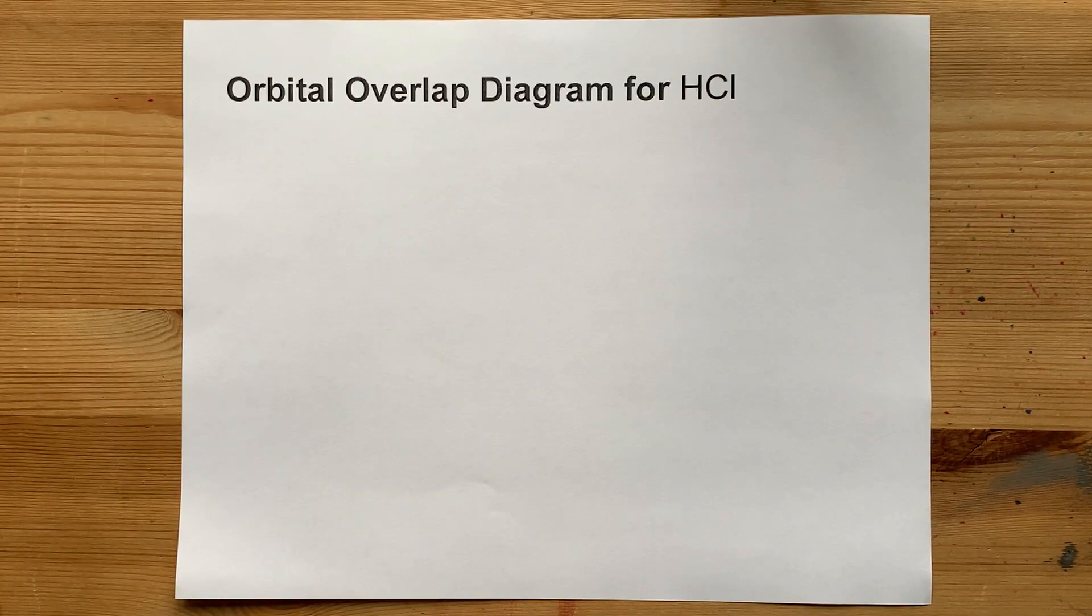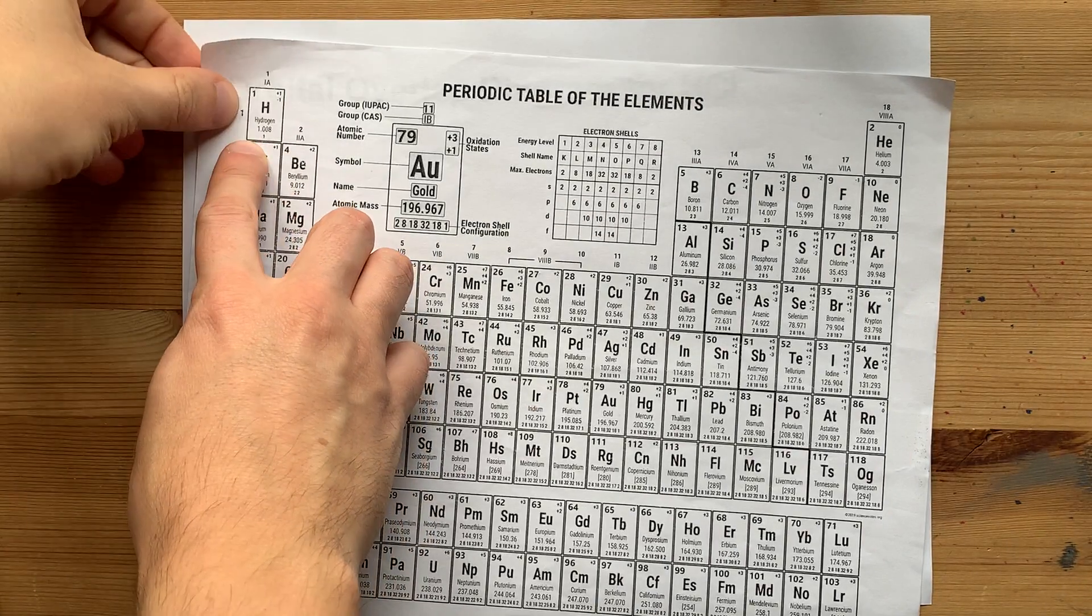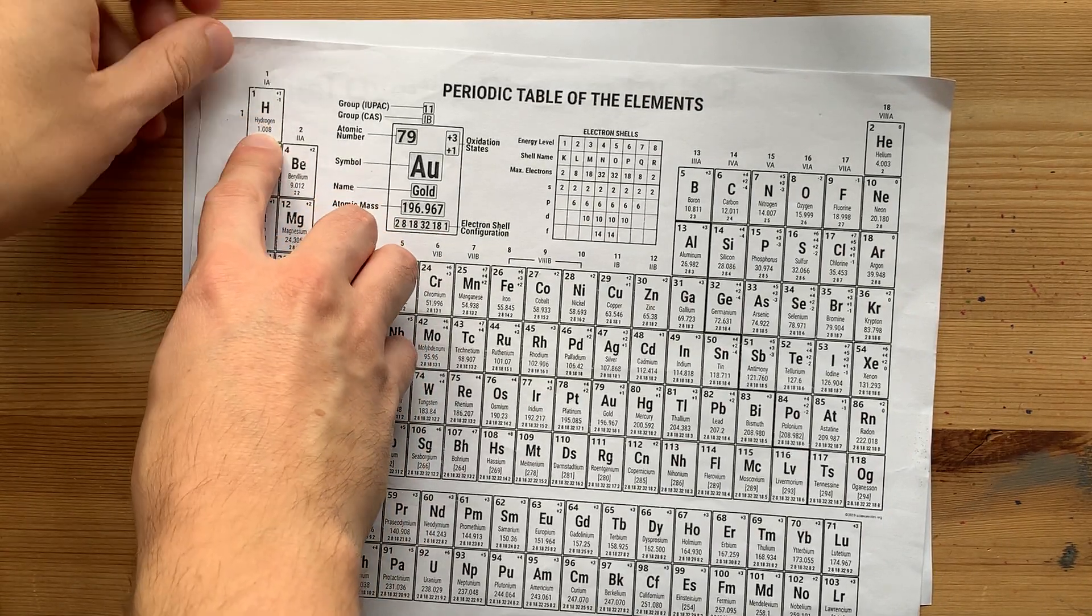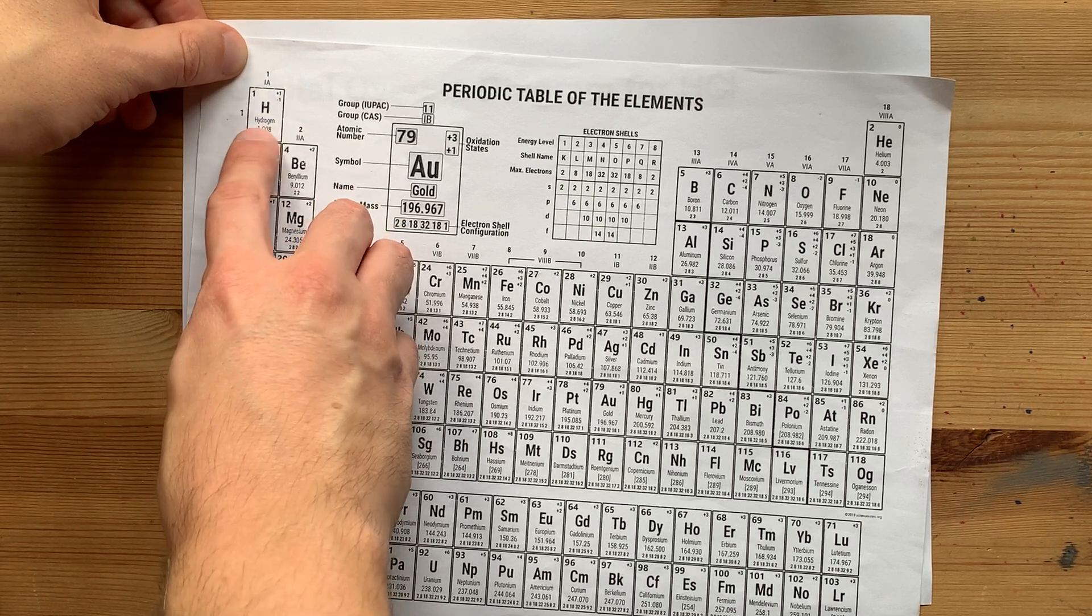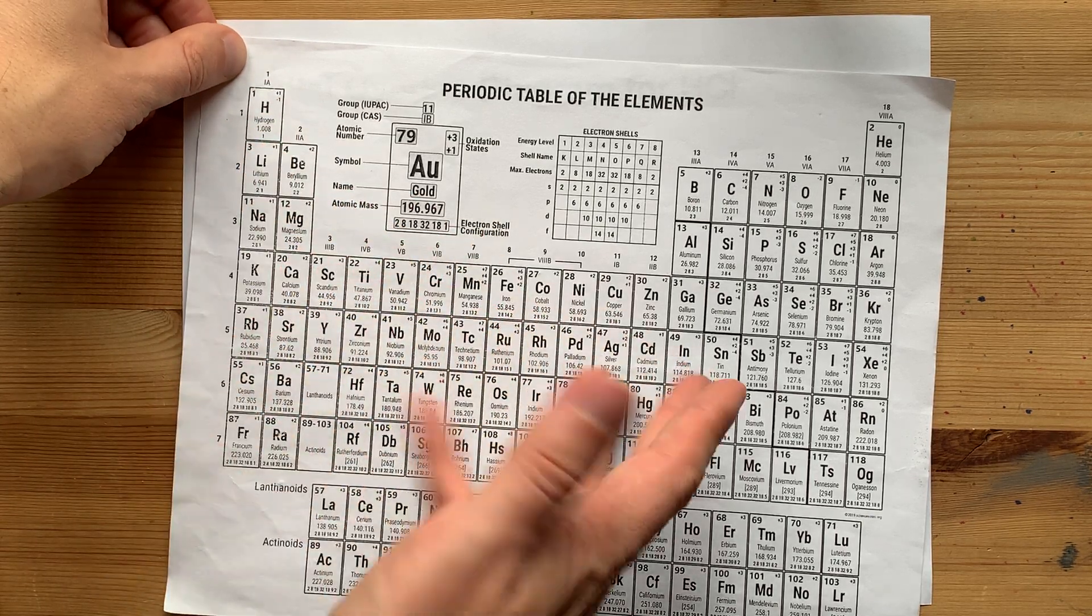Let's draw the orbital overlap diagram for HCl. H is one of the easiest atoms to draw in terms of orbitals. It only has one electron in its 1s orbital, and that is all.